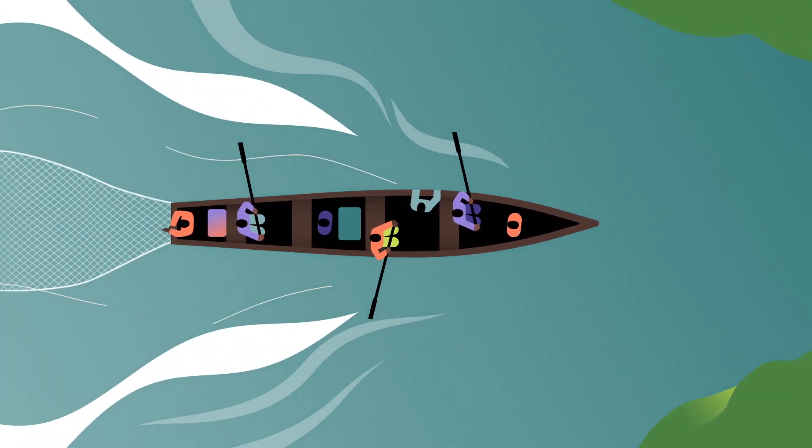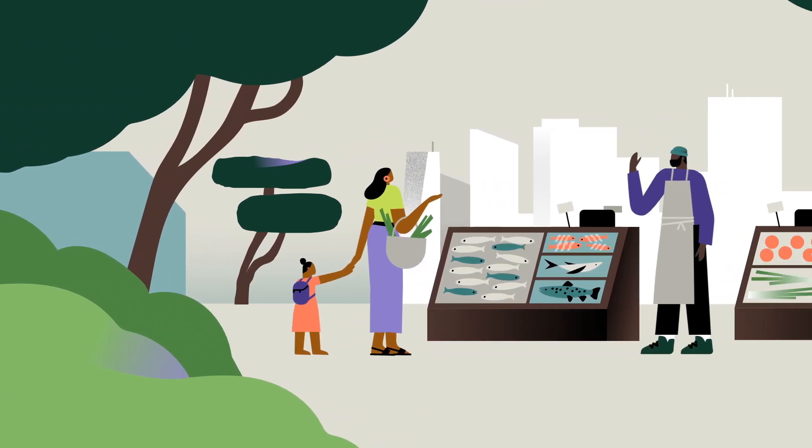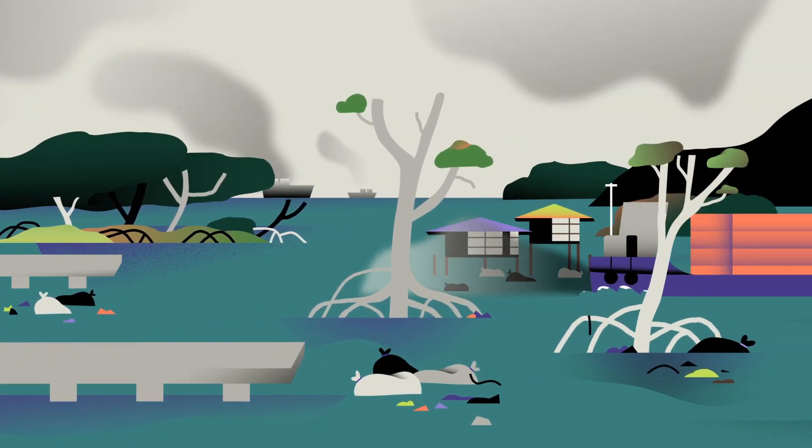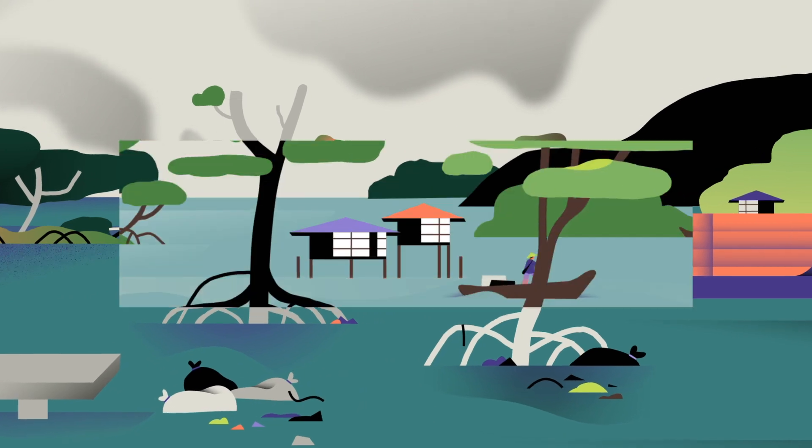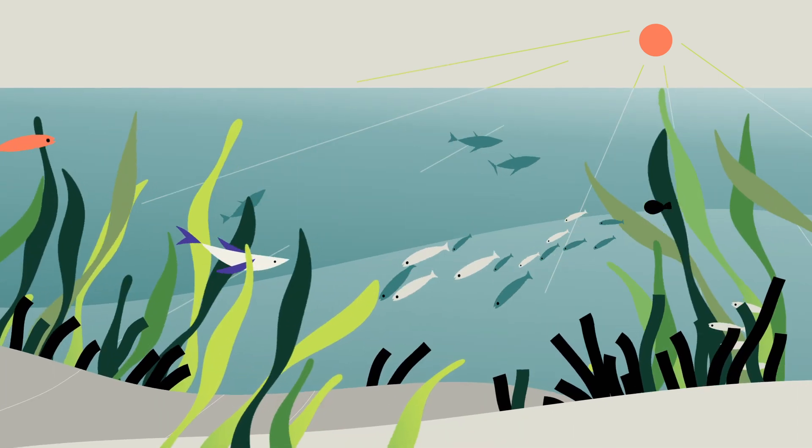But we can help these heroes out by choosing seafood that was produced without harming coastal habitats and planning new development better so we can ensure fresh water keeps flowing to mangrove roots and pollution stays out of seagrass meadows.